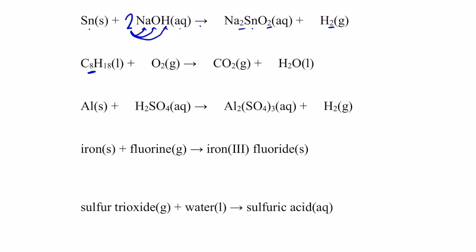We have eight carbons on this side, so let's put an eight in front of CO₂. We have 18 hydrogens, so let's put a nine in front of water — that gives me 18 hydrogens on both sides. Carbons are done, eight on both sides. Now I just have oxygens left — well, we have 16 oxygens from the eight CO₂s and nine more from the nine H₂O's.